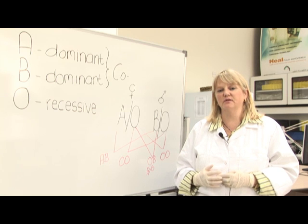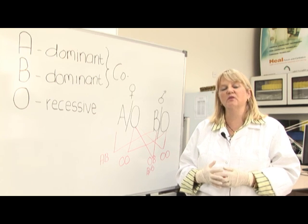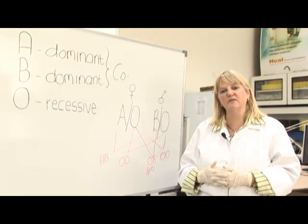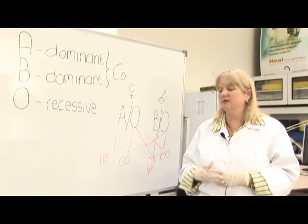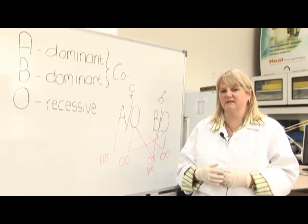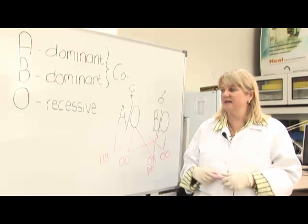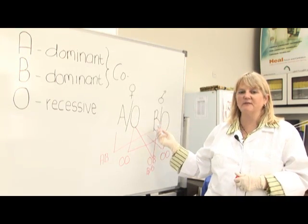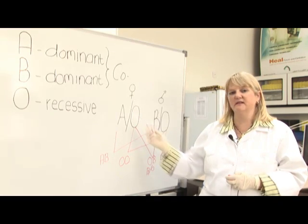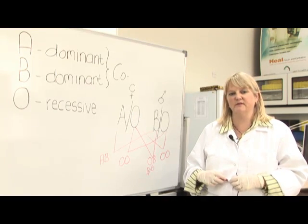In the test tube we can only tell what the phenotype is, in other words what the person looks like on the red blood cells. Whereas family studies will show what the genotype or the genetic composition is of each individual.